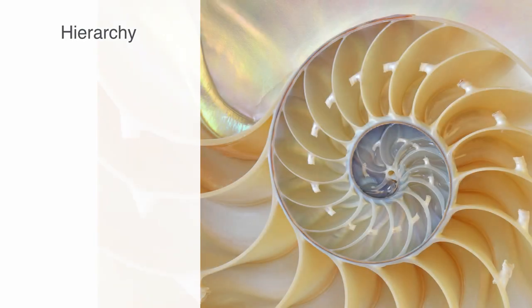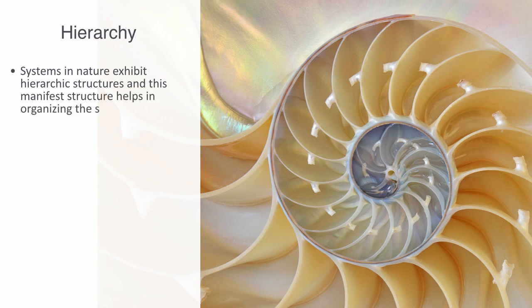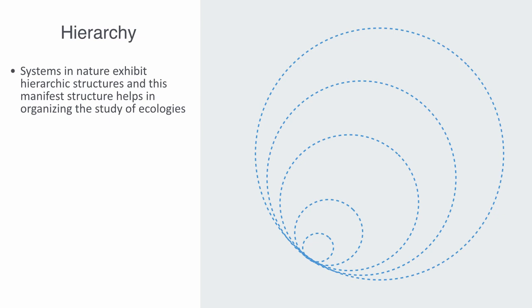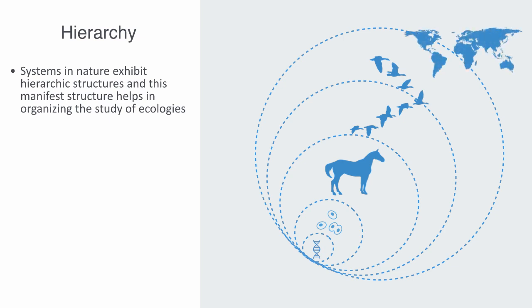Empirically, a large portion of the complex biological systems we observe in nature exhibit a hierarchical structure. This manifest structure helps in organizing the study of ecology into a conceptually manageable framework where the biological world is organized into a nested hierarchy ranging in scale from genes to cells to tissues to organs to organisms to species to populations to communities to ecosystems.